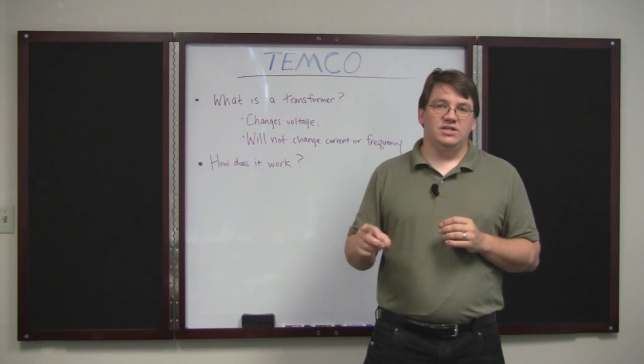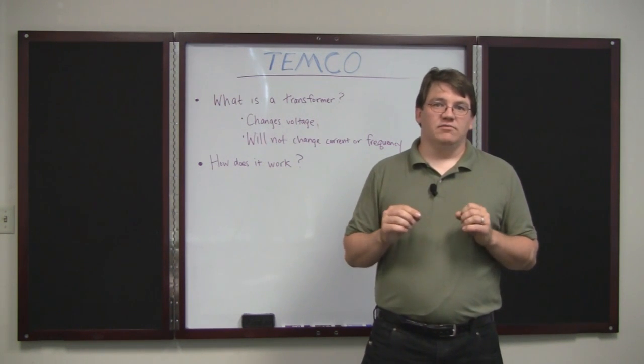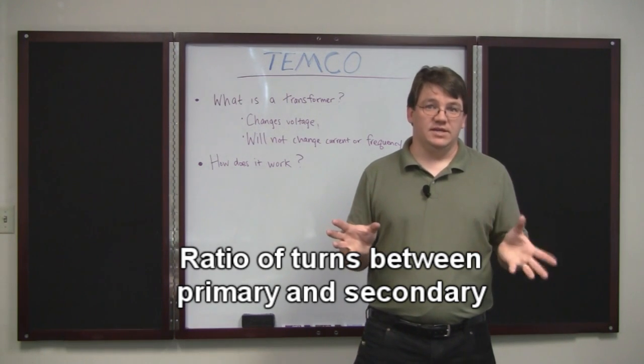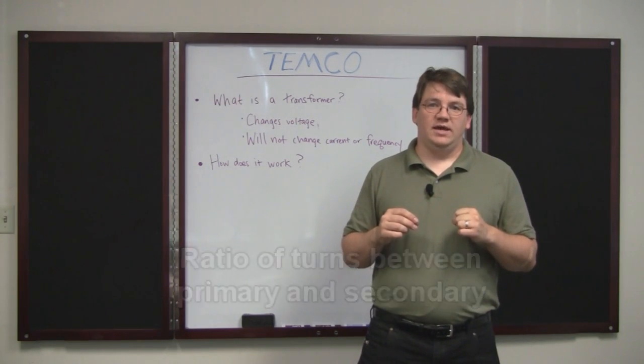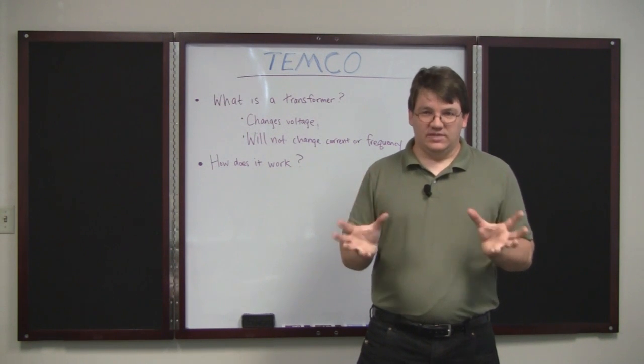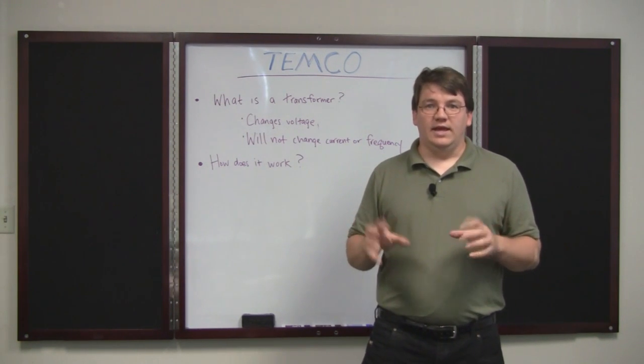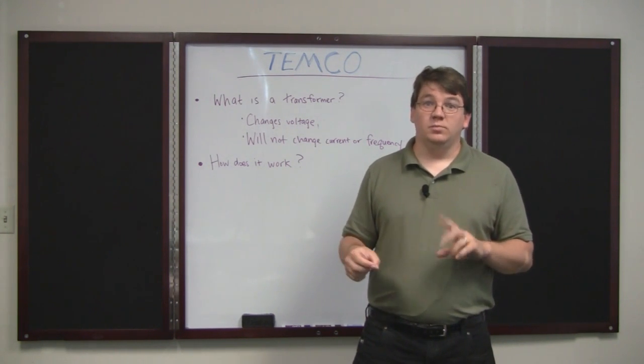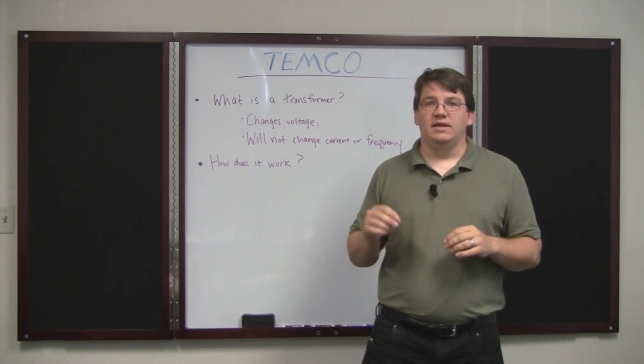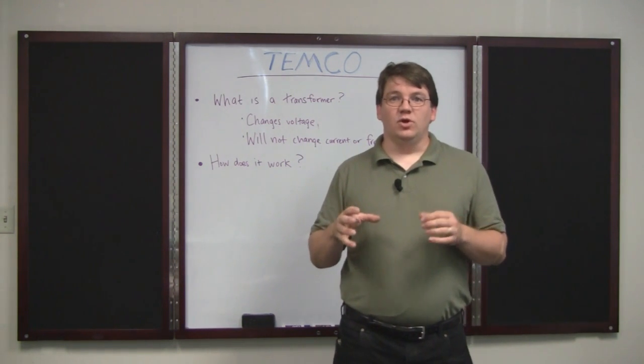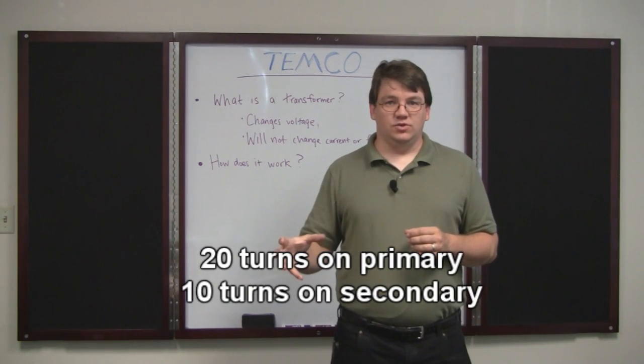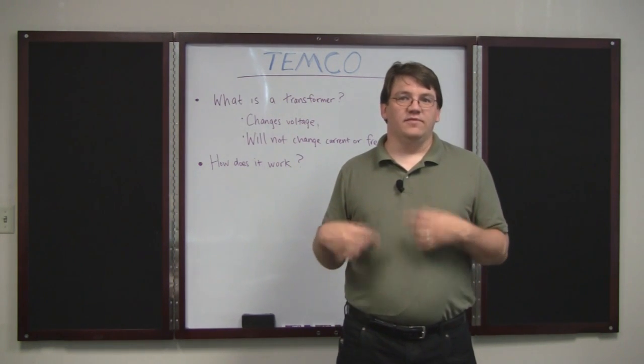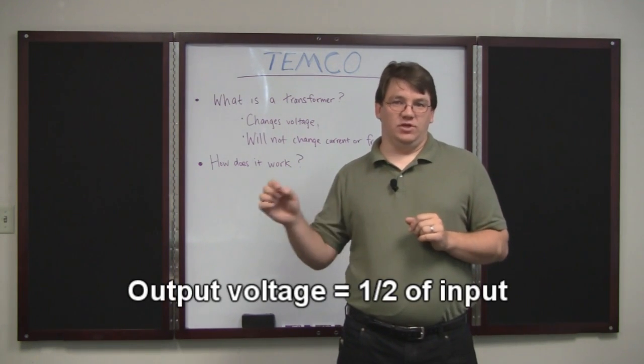The change in voltage is a result of the number of turns or the ratio of the turns between the primary and the secondary. So if you had a transformer like this with two coils and each coil had 10 turns of wire, the voltage you put in would equal the voltage you put out. However, if you had a transformer where you had 20 turns of wire on the primary and 10 turns of wire on the secondary, the voltage on the output would be half of what you put into it.